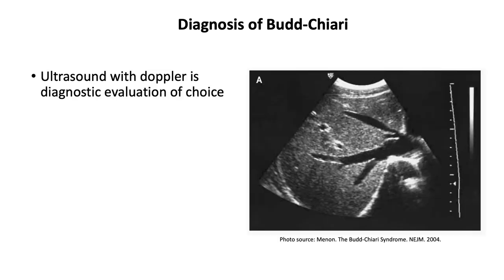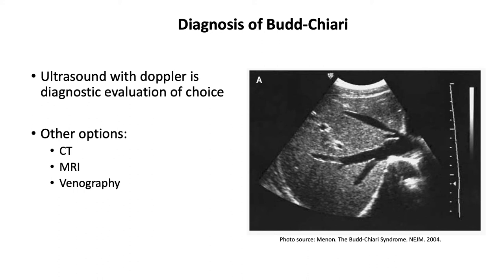So how do we diagnose it? Since it's a problem with the veins, ultrasound with Doppler evaluation of the veins is the diagnostic evaluation of choice. You can get a CT or MRI; however, that is not the preferred modality if ultrasound is readily available. Additionally, if a CT or MRI is suggestive of Budd-Chiari, it is still recommended to confirm the diagnosis with ultrasound. Venography is also an option, but it is invasive and is only used when all other imaging modalities have been negative and there is still a high index of suspicion.